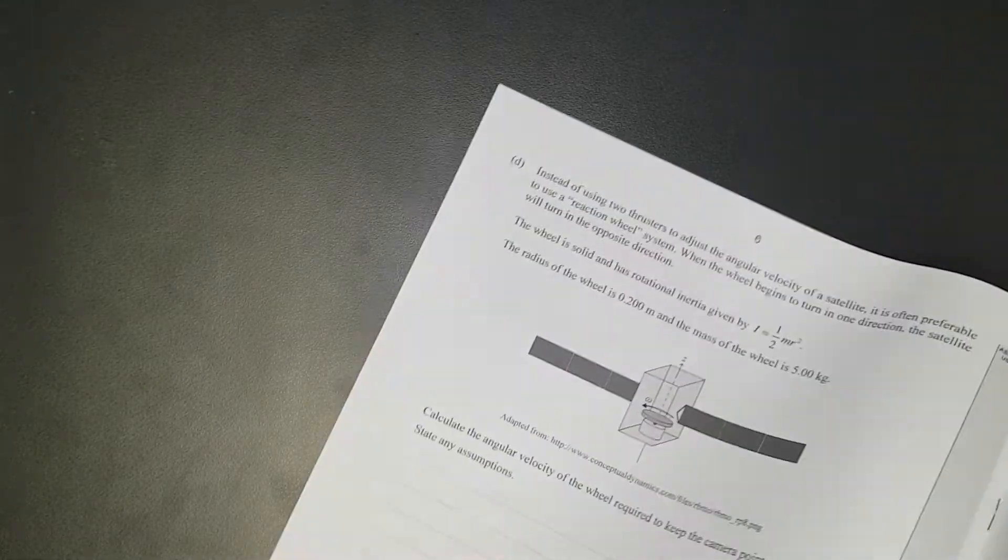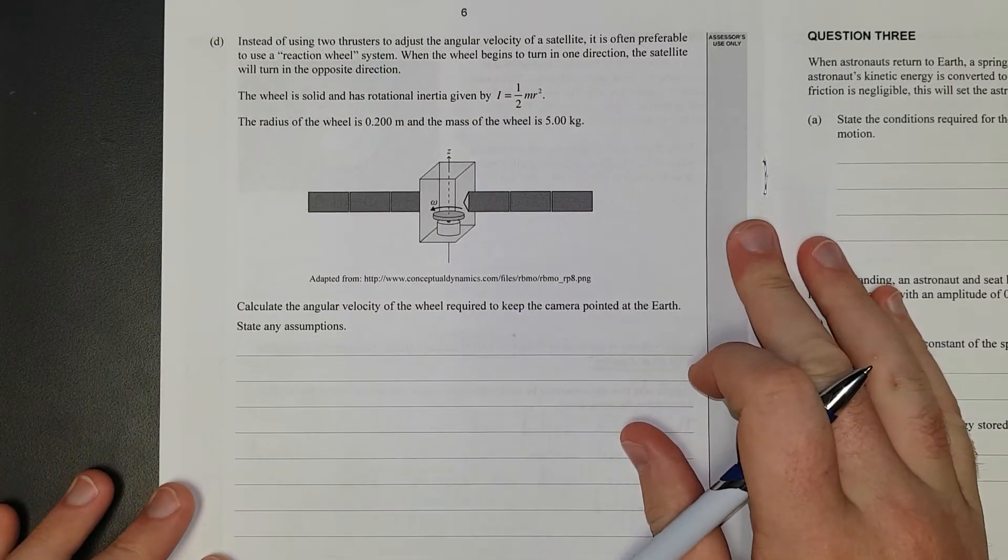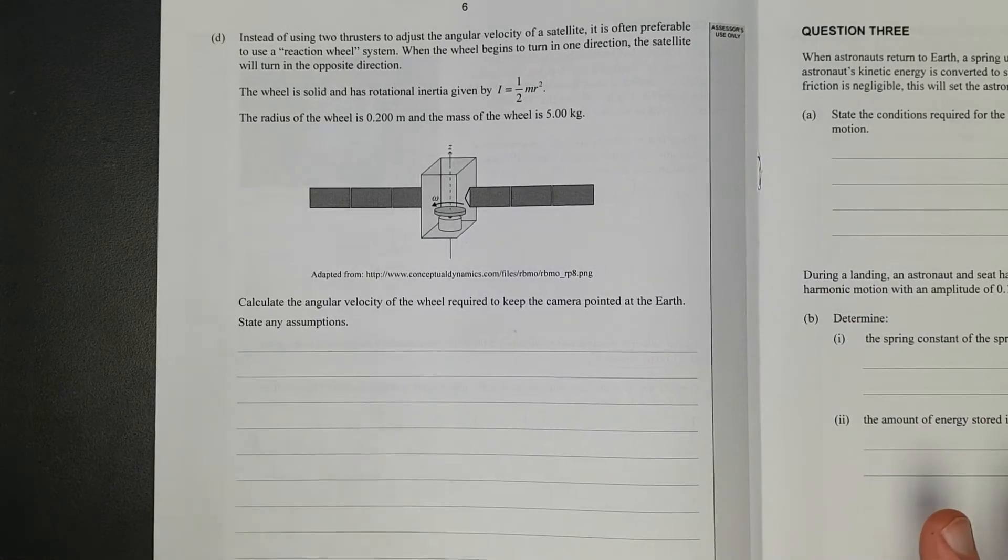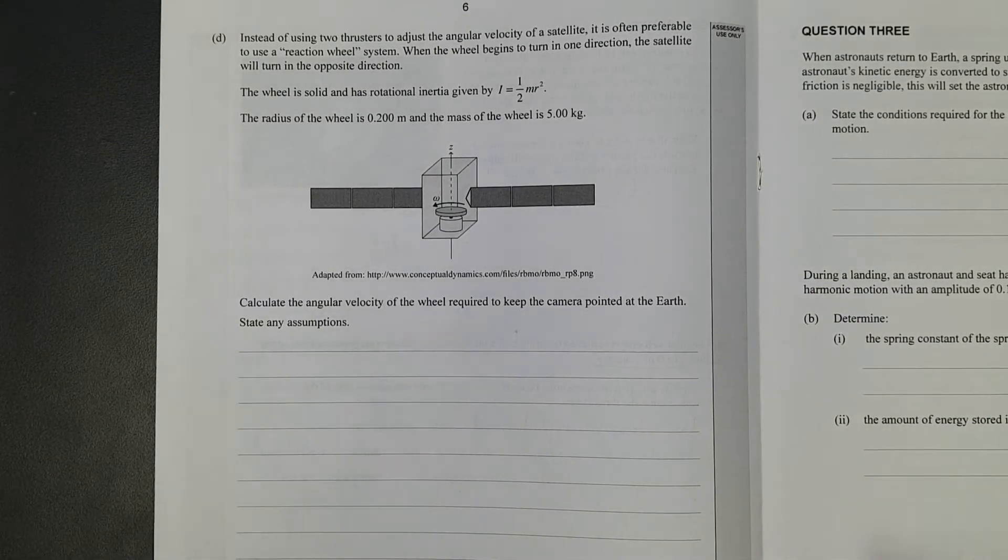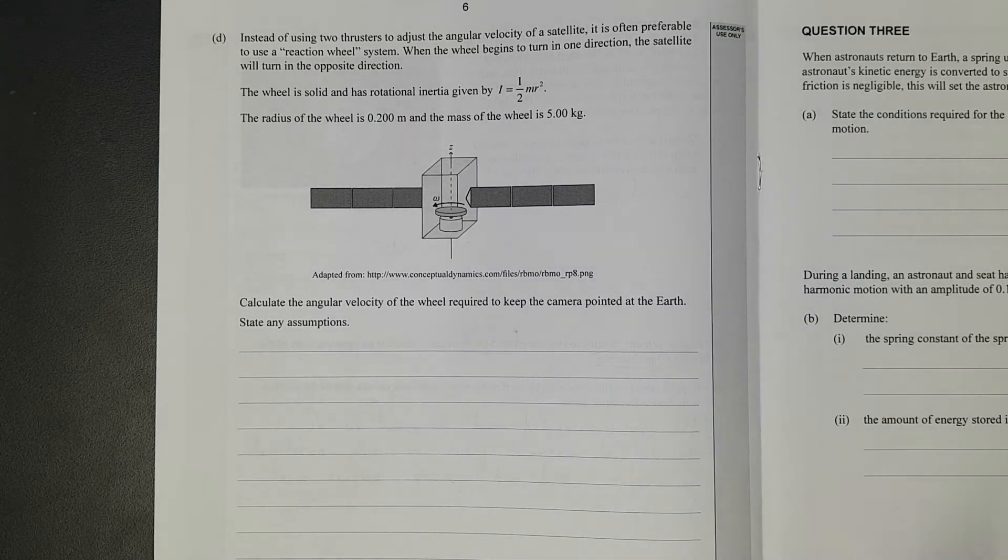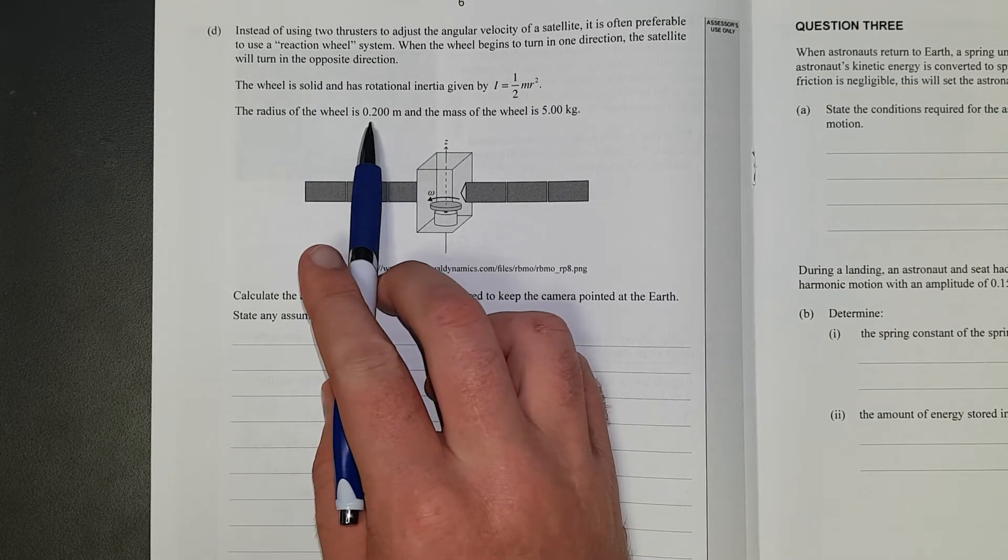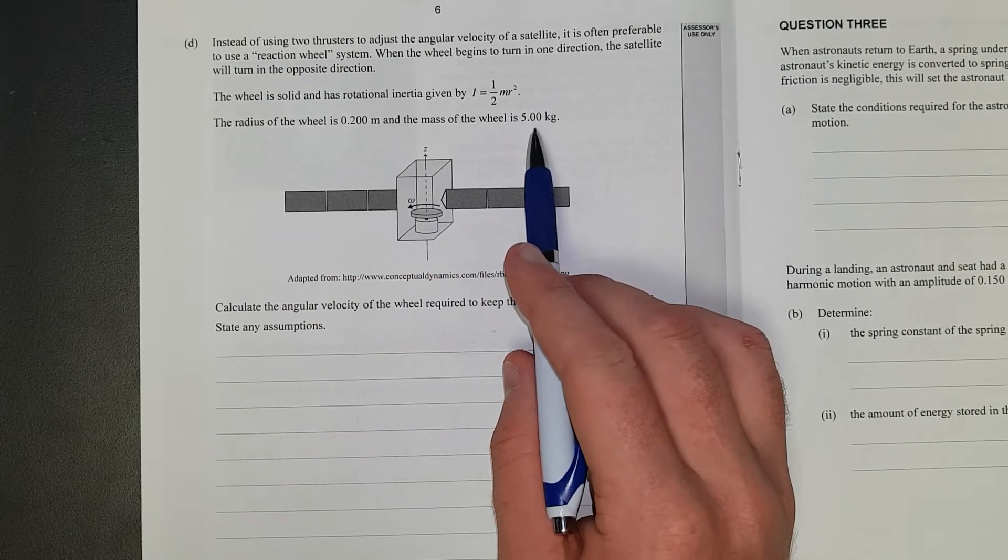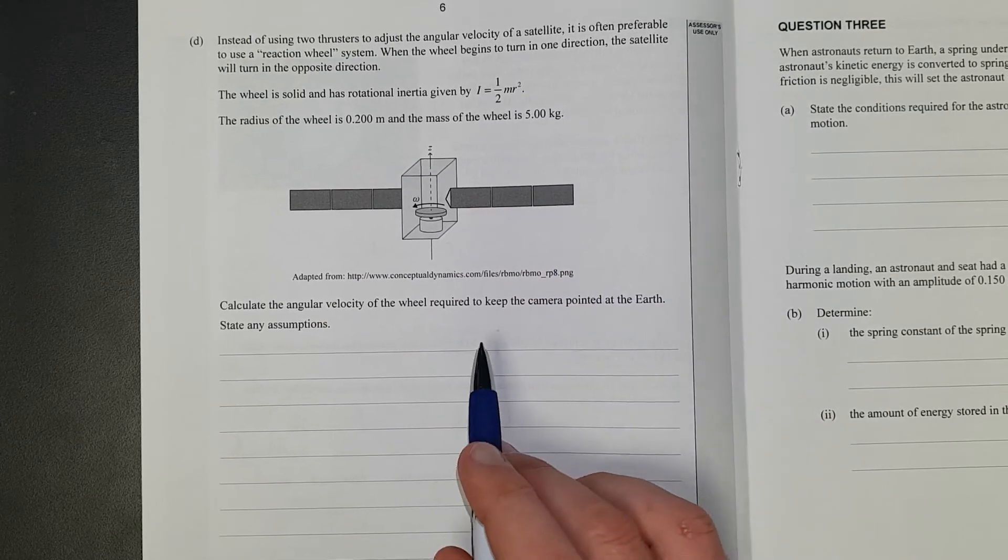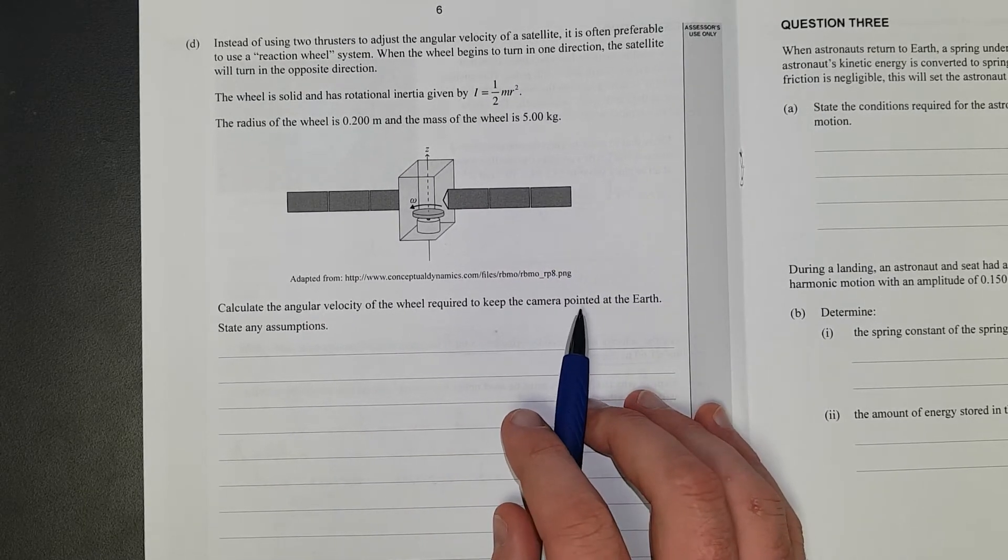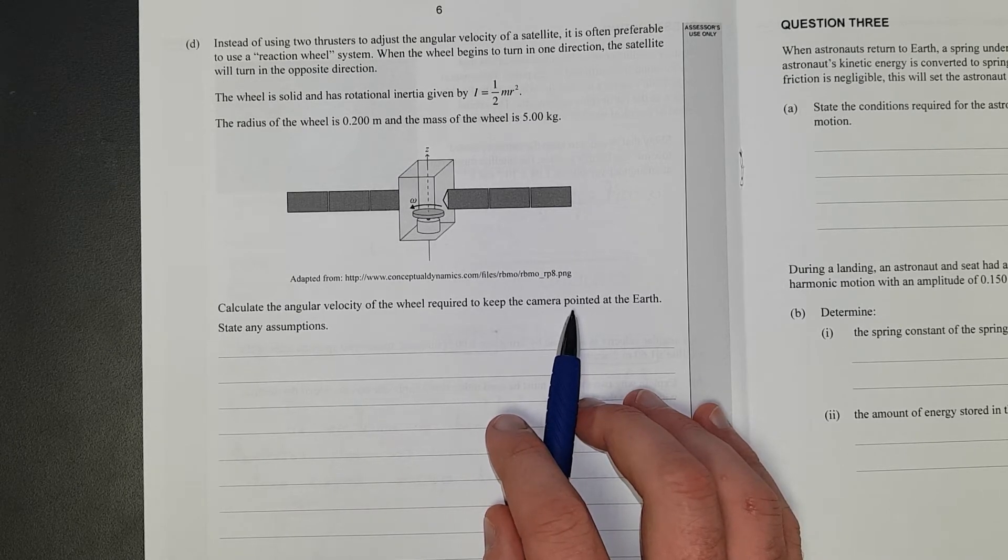Part D. Instead of using two thrusters to adjust the angular velocity of the satellite, it is often preferable to use a reaction wheel system. When the wheel begins to turn in one direction, the satellite will turn in the opposite direction. The wheel is solid. It has a rotational inertia given by half MR squared, which is actually the formula for rotational inertia of a wheel. Radius of the wheel is 20 centimeters, 0.2 meters, and it's 5 kgs. Calculate the angular velocity of the wheel required to keep the camera pointed at the earth. State any assumptions.